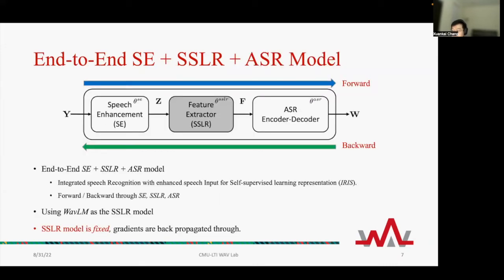To address this issue, we propose an end-to-end model that includes the speech enhancement, SSL representation, and ASR model. We call it Integrated speech Recognition with enhanced speech Input for Self-supervised learning representation, or IRIS. During the forward and backward processes, the data or gradients go through all the modules. In this work, we mainly use WaveLM as the SSL model of choice. In the training, we keep the parameters of the SSL model fixed, and allow the gradients to be backpropagated through it.